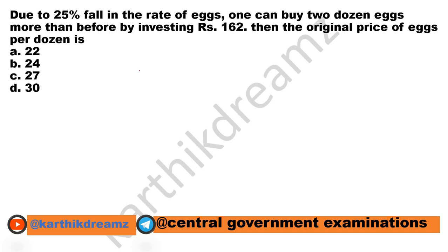In this question, they have asked: due to a 25% fall in the rate of X, one can buy 2 dozen X more than before by investing 162 rupees. Then what is the original price of X by the dozen?